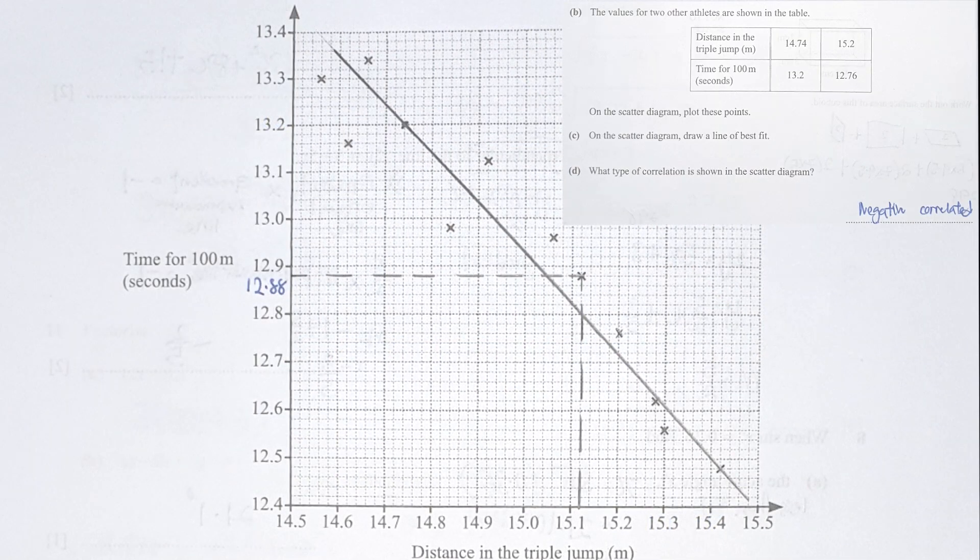Plot these two points down and draw the line of best fit. Your line of best fit might not be the same as mine, but as long as your variables are next to the line you've drawn, you should be okay. What type of correlation does this scatter diagram show? This is actually a negative correlated scatter diagram because the higher the time required to complete 100 meter run, the lower your results in triple jump.